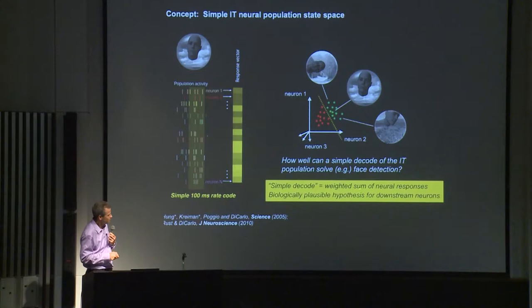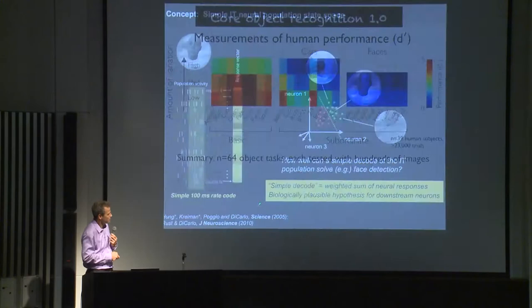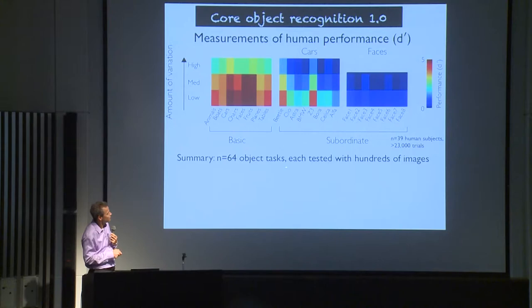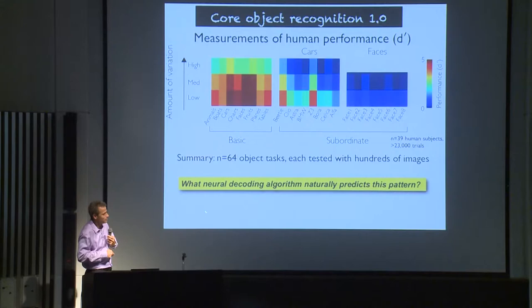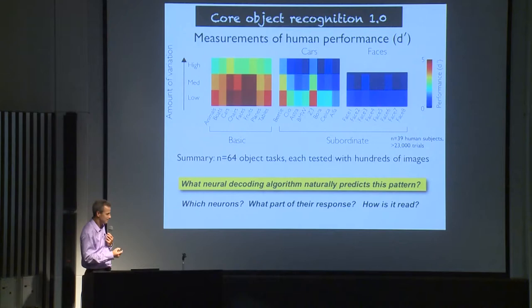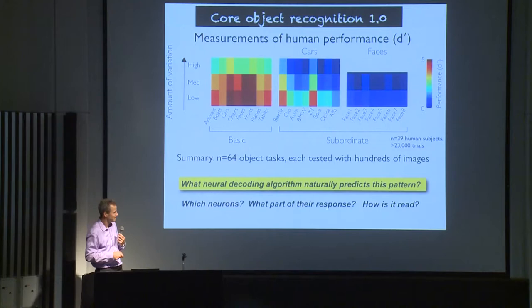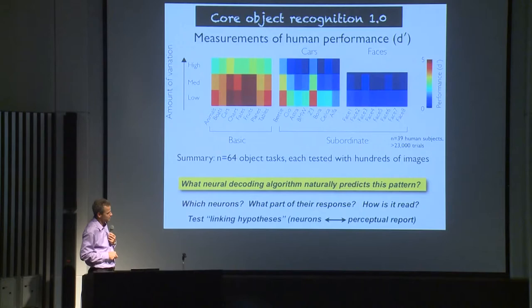You can plot each image as a point in the state space of all neurons in IT cortex. Then you can ask: how well can this space tell a downstream viewer — is there a face in this image or not? We apply simple linear decoders: weighted sums of neural activity followed by a threshold making the decision 'face or not face.' This is a biologically plausible hypothesis for what a downstream viewer could be doing. We collected 2,500 images across 168 neurons in IT, giving us an estimate of what this population does in response to a large number of images.